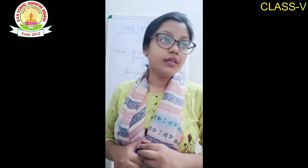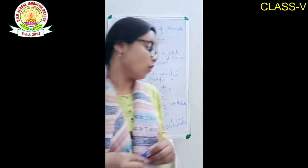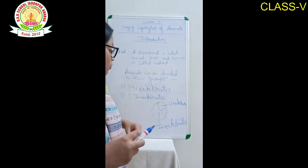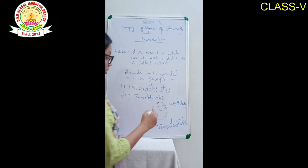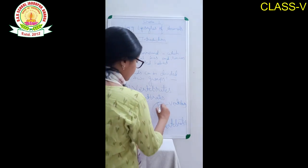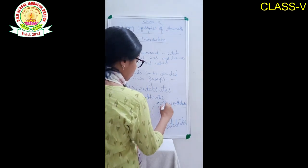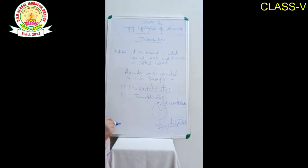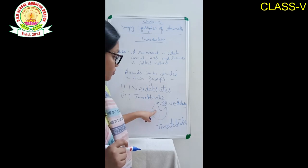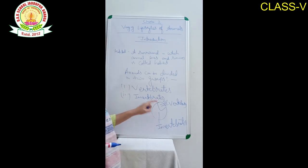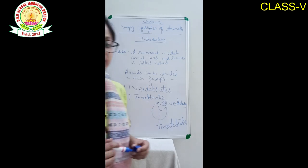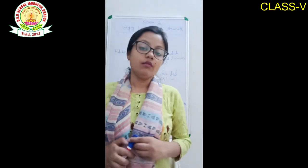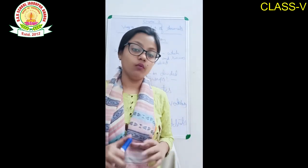For example, worms are invertebrates. Only about 3% of animals in the world are vertebrates. The rest are invertebrate animals.